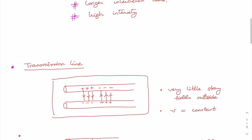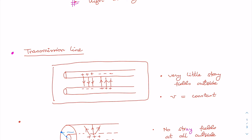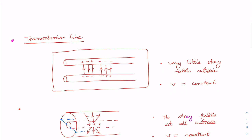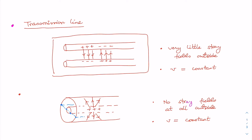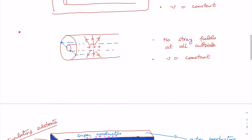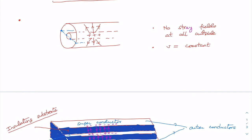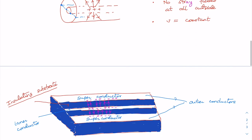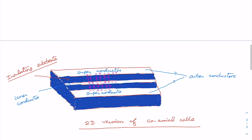We discussed that a transmission line can be constructed by considering two metallic wires parallel to each other, or a coaxial cable — two concentric metallic cylinders. The advantage of the coaxial cable is that there would be hardly any stray field outside. The speed of the signal is constant, not dependent on wavelength or frequency. We also learned how this coaxial cable model, a three-dimensional one, can be utilized to design a two-dimensional version on a chip.